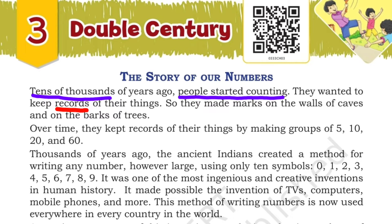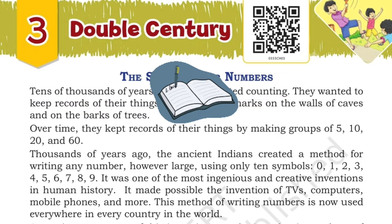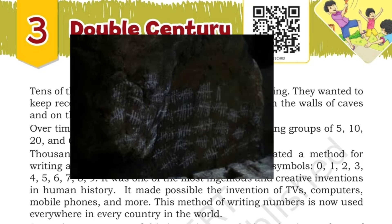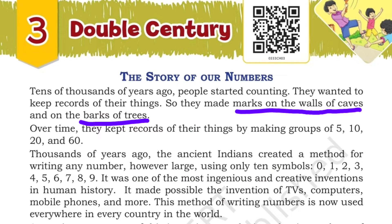They wanted to keep a record of their things. So they made marks on the walls of caves and on the barks of trees. Now if we want to count and keep a record, we write in a notebook or save in our mobile phone. But thousands of years ago there were no notebooks or pencils or paper, so they would mark on cave walls and tree barks to count their numbers.